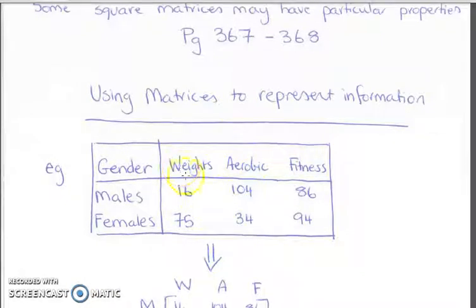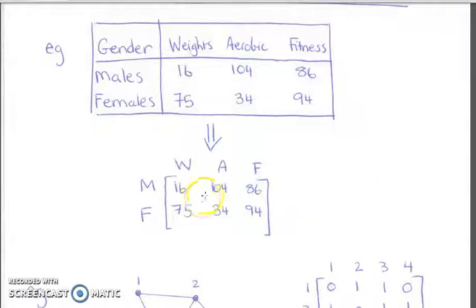Representing information from a table into a matrix. Pretty straightforward. Make sure you're labeling to help you along what those columns and what those rows are. There's an example with agenda and some information with values.